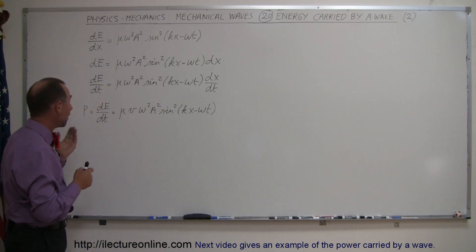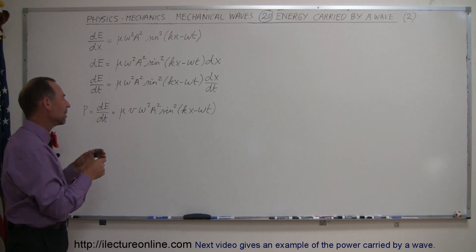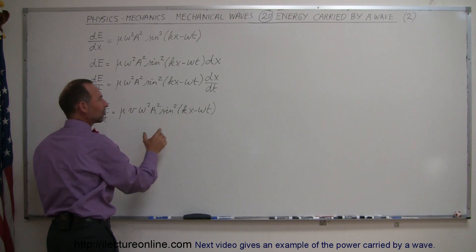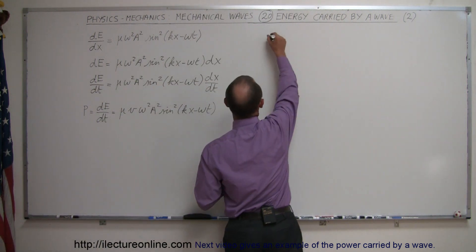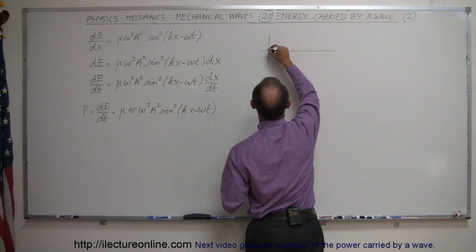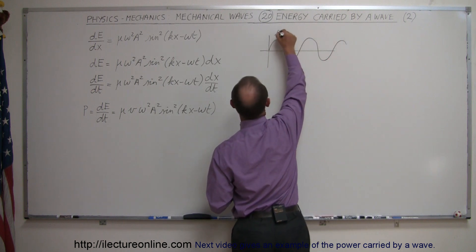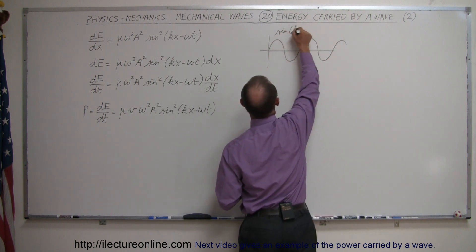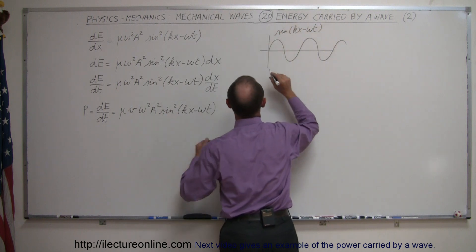So now we have the power as a function of x and t, but remember that this is still a sine function squared, so what does a sine function squared look like? Well, if this is a sine function like this, this would be the representation of a wave, this would be, for example, the sine of Kx minus omega t, and of course times some amplitude.